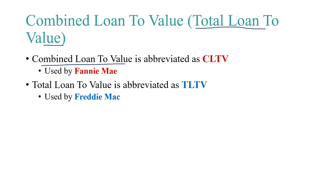Let's talk about the combined loan-to-value, or CLTV, and the total loan-to-value, or TLTV. The CLTV is used by Fannie Mae, while the TLTV is used by Freddie Mac. They both calculate the same thing — it's just different names depending on whether it's Fannie Mae or Freddie Mac.